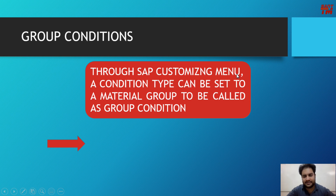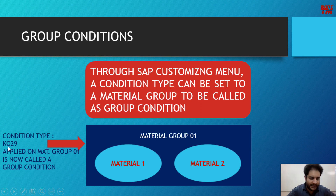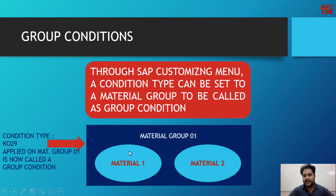Through the SAP customizing menu, you can select a condition type and when you apply that condition type to a material group or a customer group, it is called a group condition. For example, material group 01 has two materials: material 1 and material 2. If we apply condition type K029 to this material group, then K029 is called a group condition.